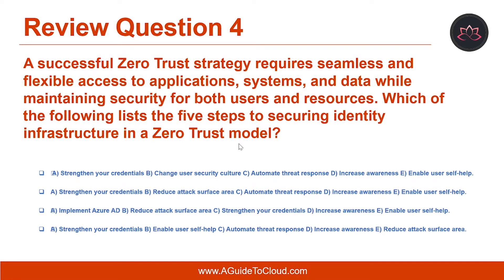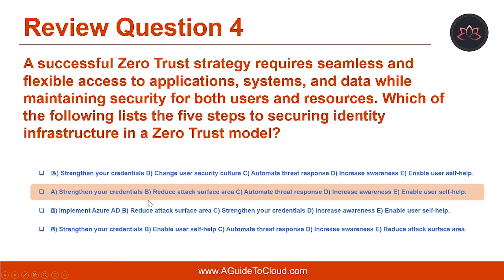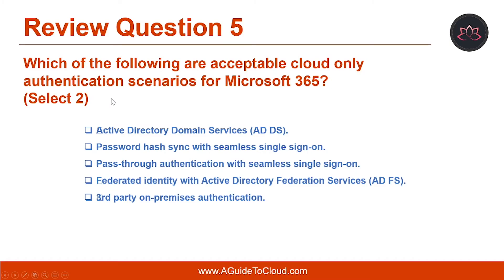Let's look at question number 4. A successful zero-trust strategy requires seamless and flexible access to applications, systems, and data while maintaining security for both users and resources. Which of the following lists the five steps to securing identity infrastructure in a zero-trust model? The right answer is: strengthen your credentials, reduce attack surface area, automate threat response, increase awareness, and enable user self-help.